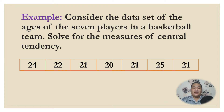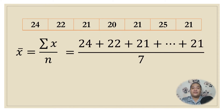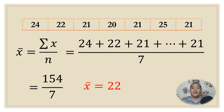Example: Consider the data set of the ages of seven players in a basketball team — 24, 22, 21, 20, 21, 25, 21. To obtain the mean, we use the formula x̄ = Σx / n. We add all the scores and divide by 7. Adding up all the scores gives 154; divided by 7, we obtain 22. Therefore, the mean of these scores is 22.